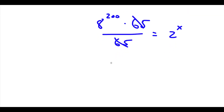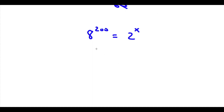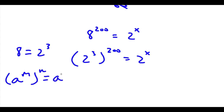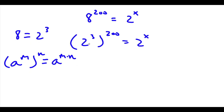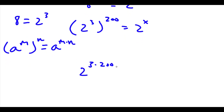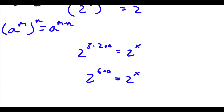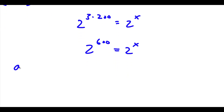These two 65s can simply cancel out, so now I have 8 to the power of 200 is equal to 2 to the power of x. Now, 8 is equal to 2 to the power of 3, so if I substitute in 2 to the power of 3 for 8, I get 2 to the power of 3 to the power of 200 is equal to 2 to the power of x. If I have something in the form a to the power of m to the power of n, this is equal to a to the power of m times n. So 2 to the power of 3 to the power of 200 equals 2 to the power of 3 times 200. 3 times 200 is 600, so 2 to the power of 600 is equal to 2 to the power of x. Since both bases are equal, m equals n, so x is equal to 600.